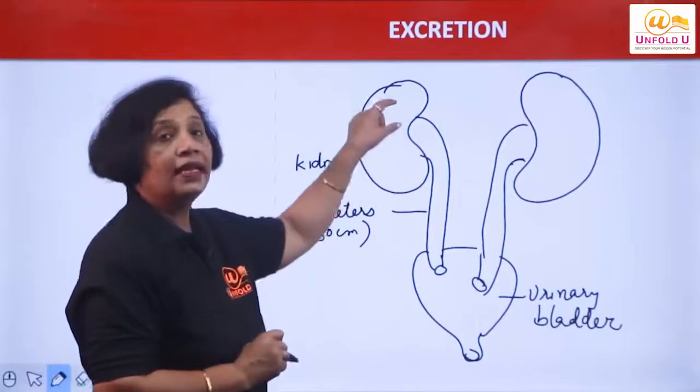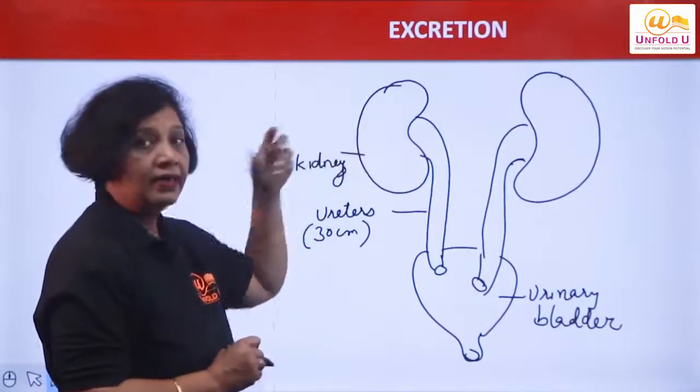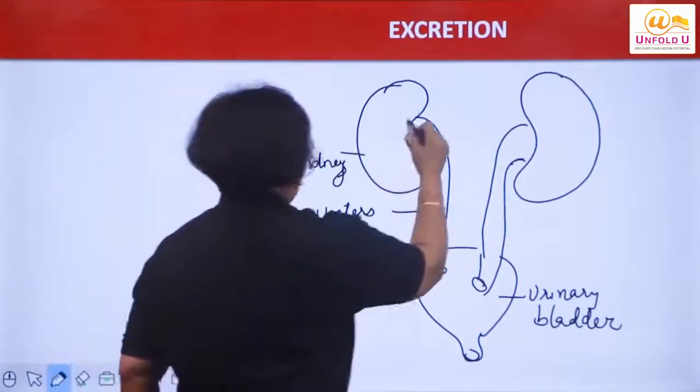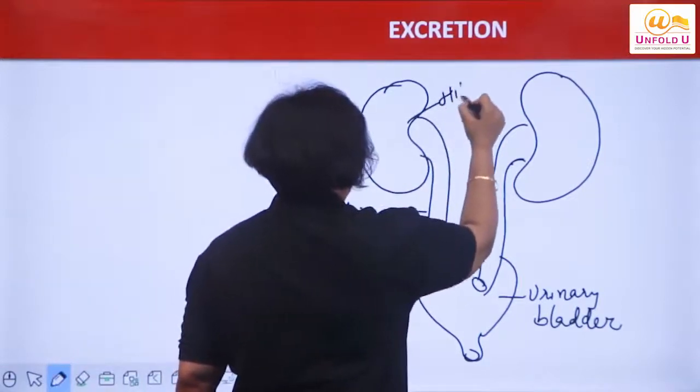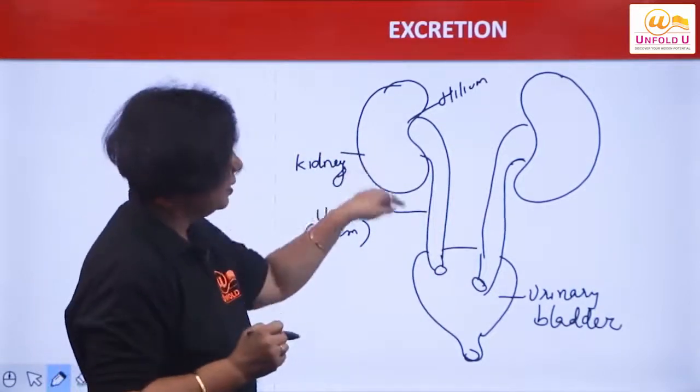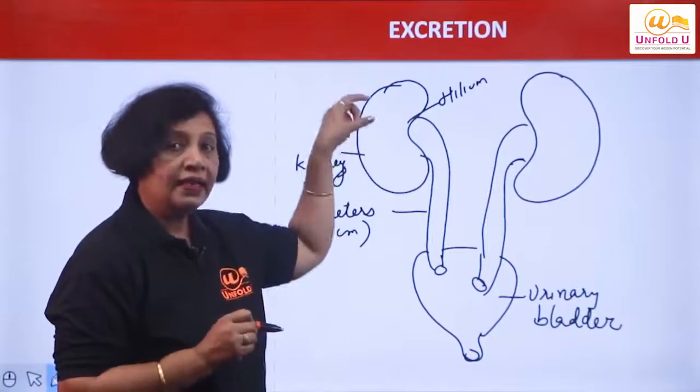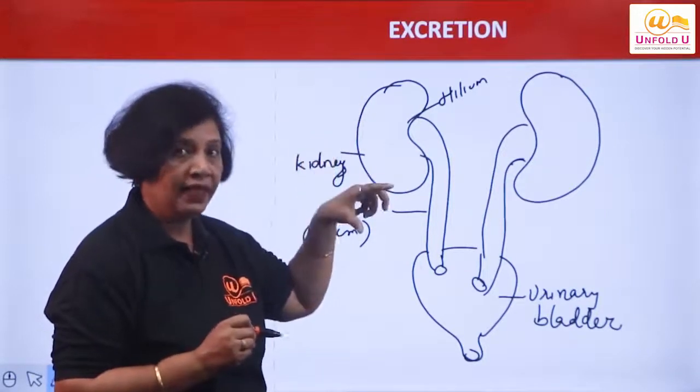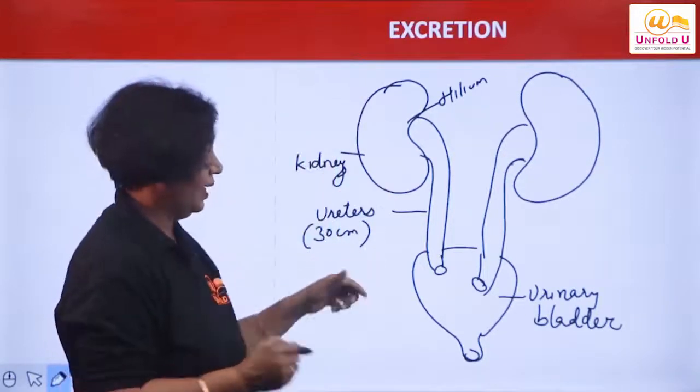From a point in the kidneys, from a cavity of the kidneys. This cavity is called helus, or helium. These ureters, these tubes, arise from the kidney's cavity which is called the helium.